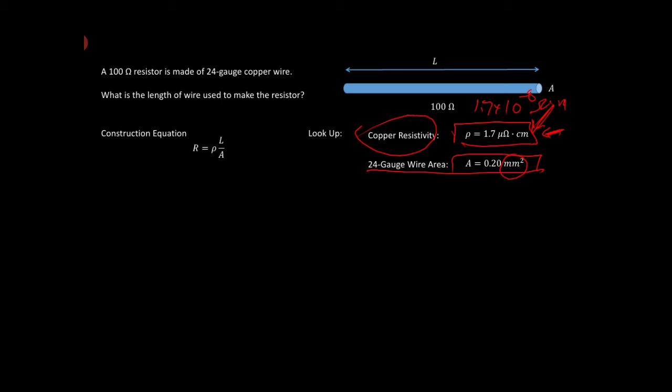So, now we've got all these things. We've got everything except the thing we want. Right, we want to find that. We've had to look up the rho and the A, and the resistance, the target resistance is 100 ohms. So we're saying 100 ohms is equal to 1.7 times 10 to the minus 8 ohm meters times the length that we want divided by the area, which is 0.2 millimeters squared.